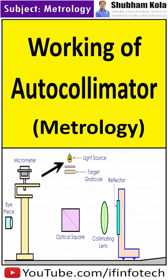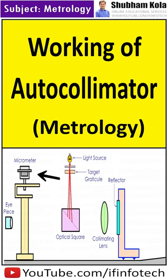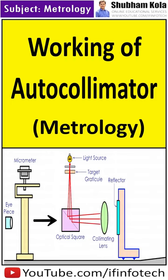It consists of a light source. A reflector acts as the workpiece. A micrometer microscope is used to see the points of incident rays and reflected rays. An optical square is used for changing the direction of light rays by 90 degrees.